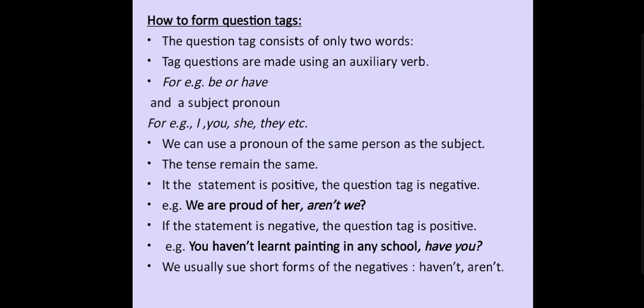Be careful, children. If the statement is positive, the question tag is negative — we have to write a negative question tag. For example, 'We are proud of her.' The auxiliary verb 'are' is given in the sentence, and I have added 'not' to it because the statement is positive. So the question tag will come negative: 'aren't we.'